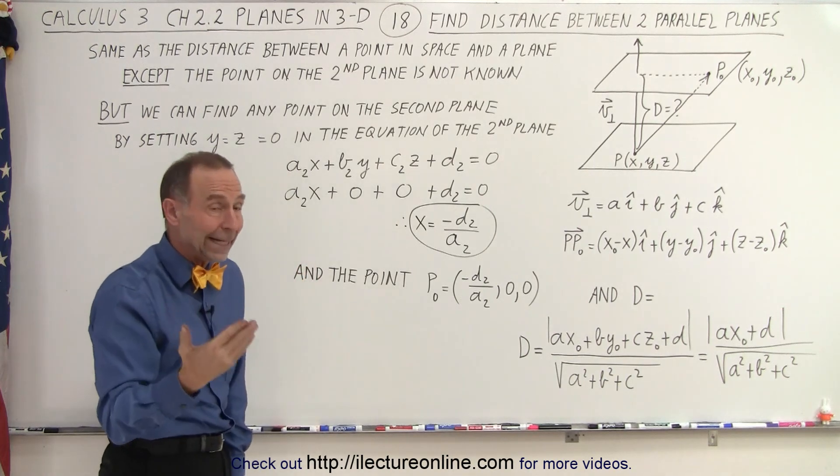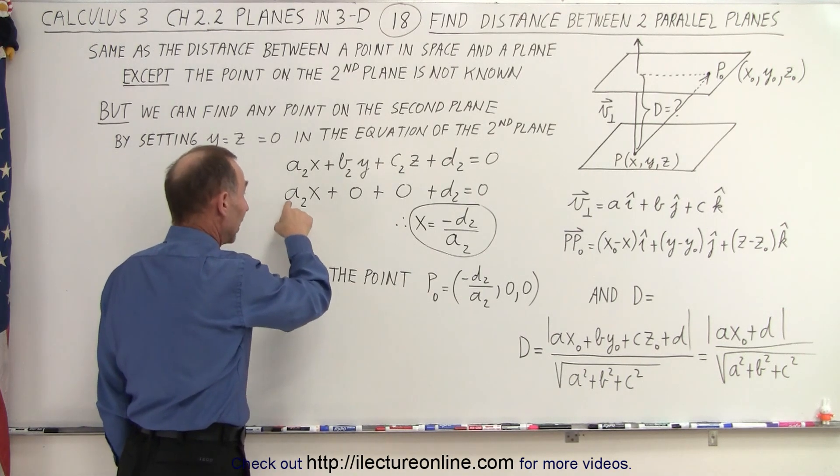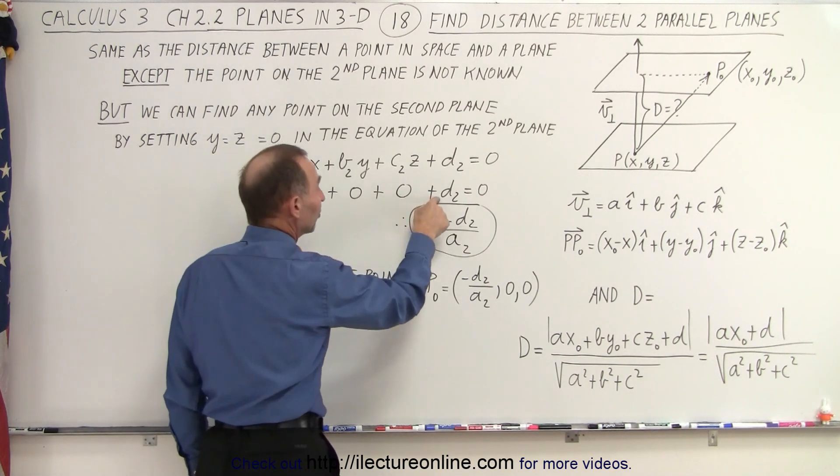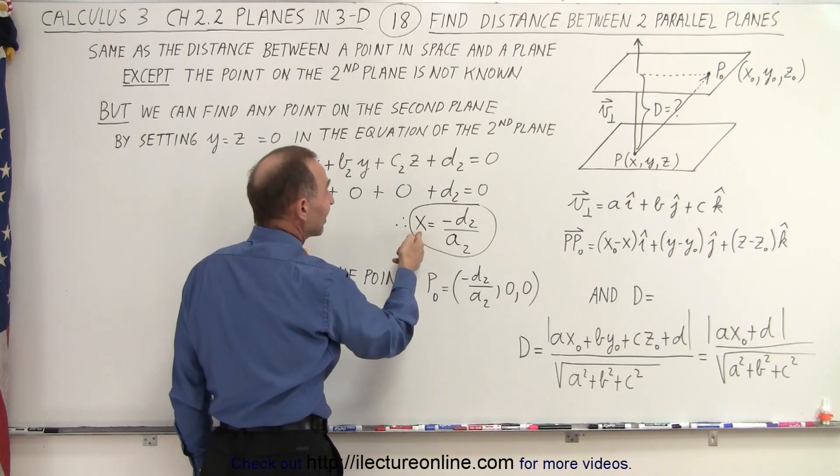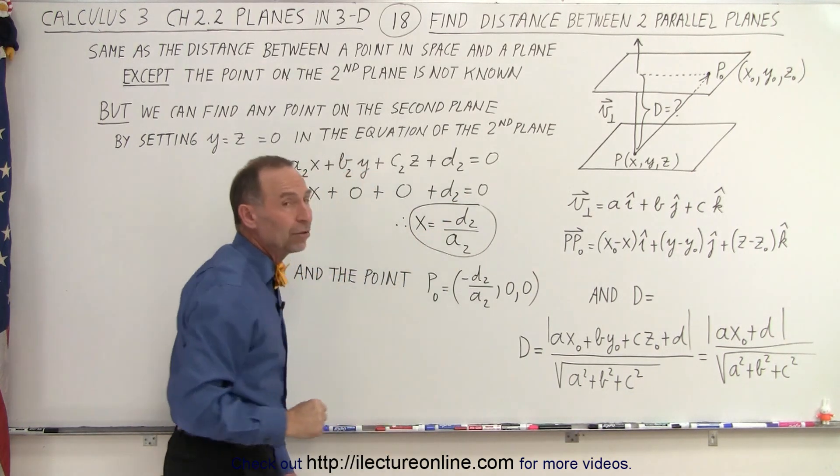then let's assume that this is the equation of the second plane. We set y equal to zero, z equal to zero, and all we have left is AX. We'll call it sub two because I want to indicate that's the second plane. So A sub two times X plus D sub two equals zero, so X will equal negative D two over A two.